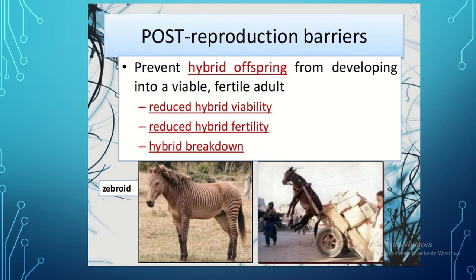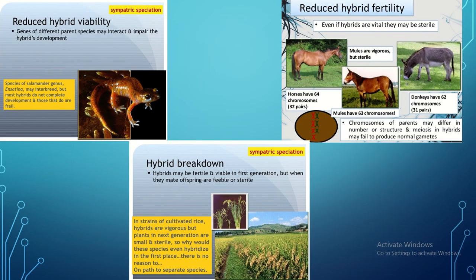The first postzygotic example is reduced hybrid viability: genes of different parent species may interact but impair the hybrid's development. In salamanders, they may interbreed but most hybrids do not complete developmental stages; they develop chromosomal abnormalities and the fetus is born dead.